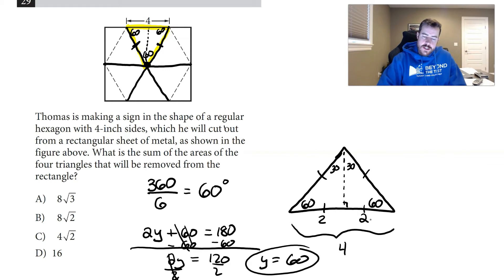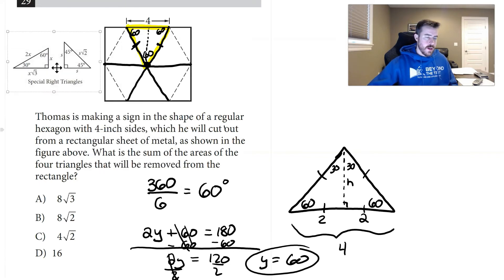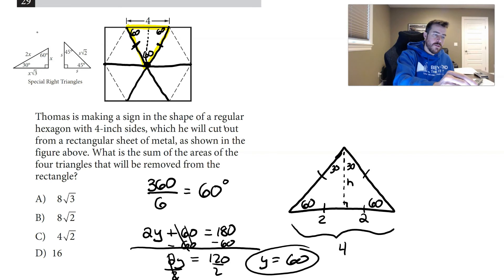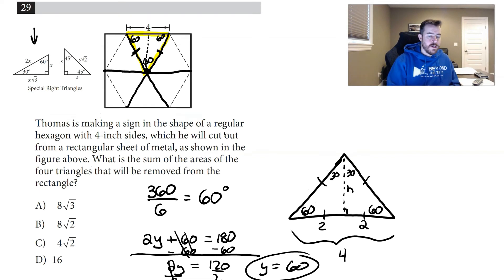This is actually a 30-60-90 triangle. There's two things you could do: you could use SOHCAHTOA and solve for the height of this triangle, or you could use law of sines. But the easiest thing to do in my opinion would be to use the rules from a 30-60-90 triangle, which they give to you on this test. Let me pull those up here—I just copied this straight off the reference table.